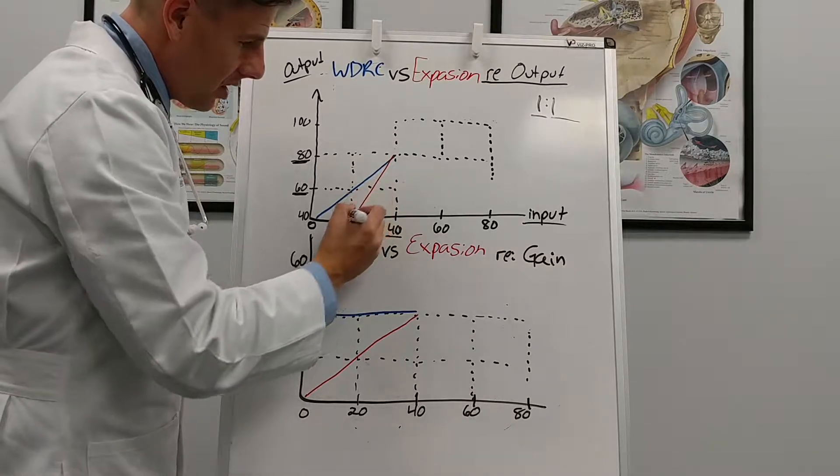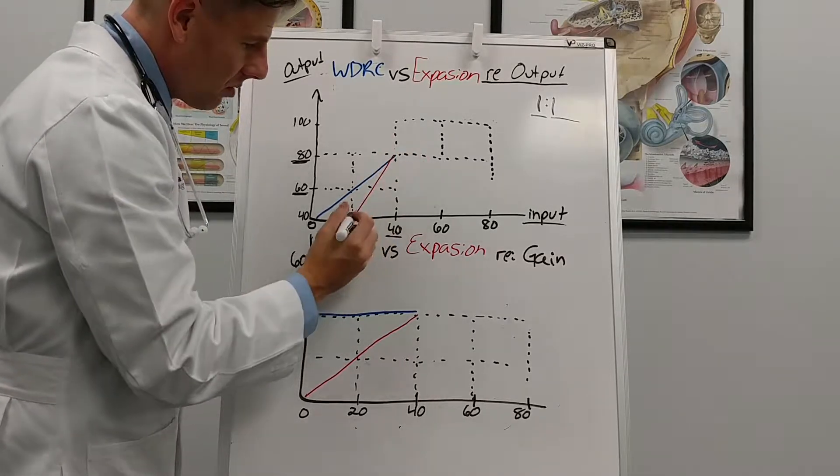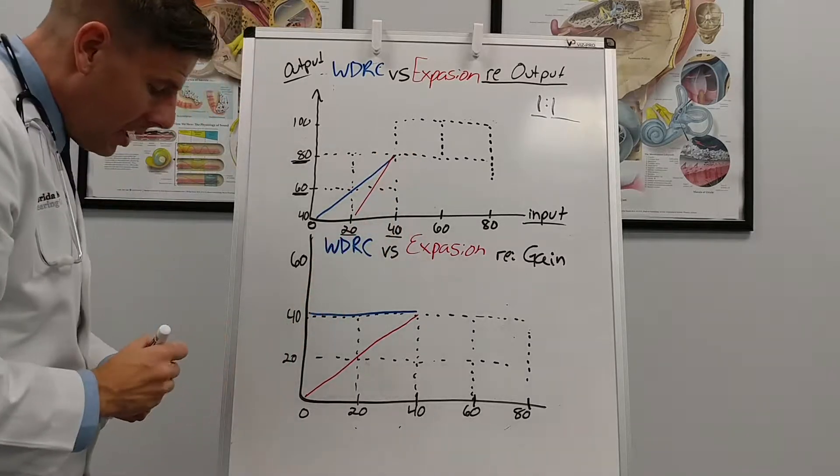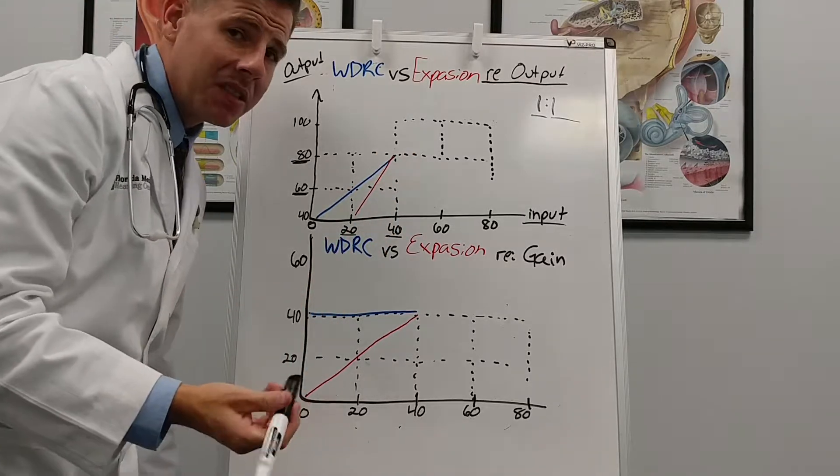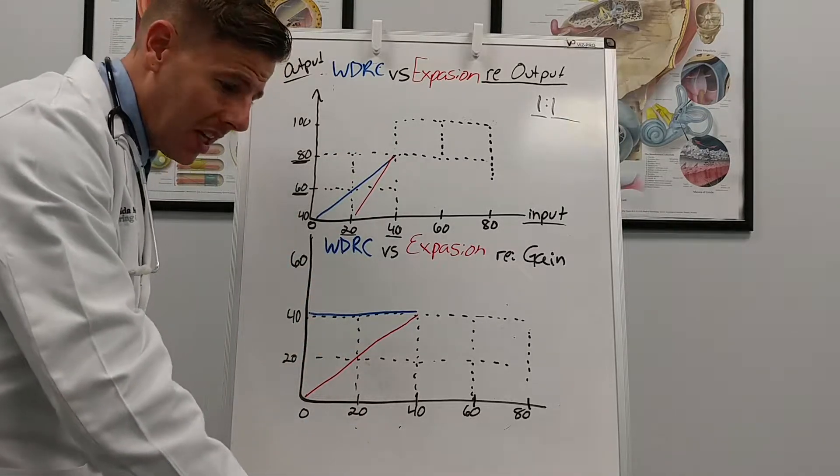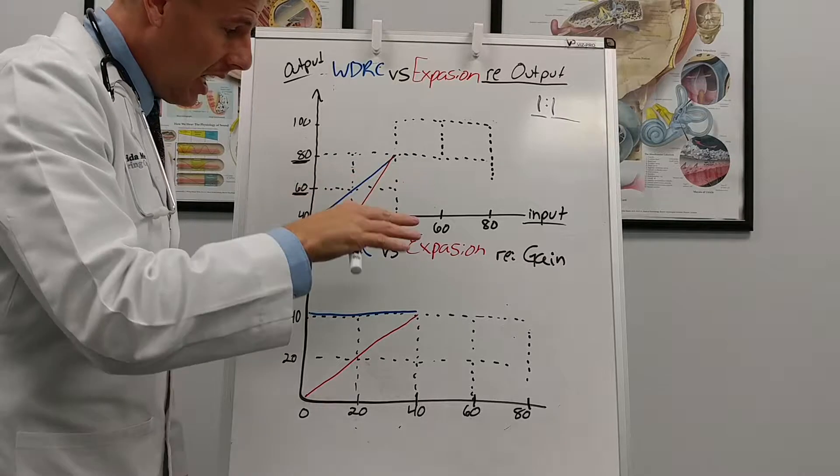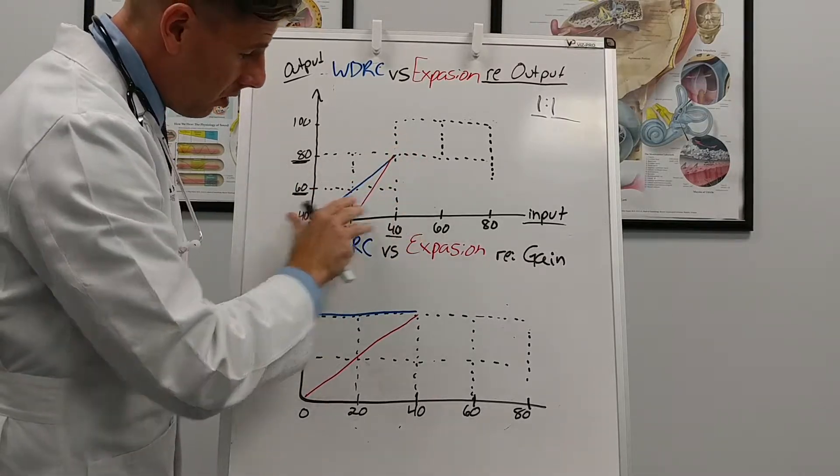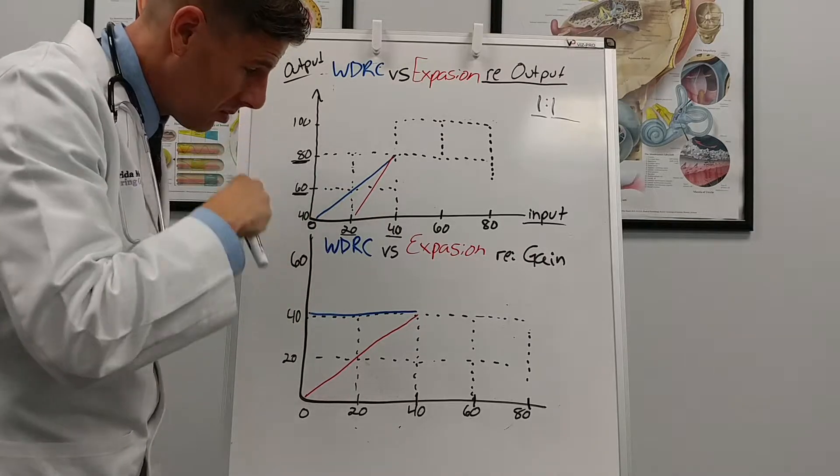What you'll see here is an aggressive line of expansion which is even a little more aggressive than a one to one. Expansion is the opposite of compression. What expansion does is it decreases soft sounds and increases loud sounds and why you'll usually see expansion in the lower decibels is because it helps with circuit noise.